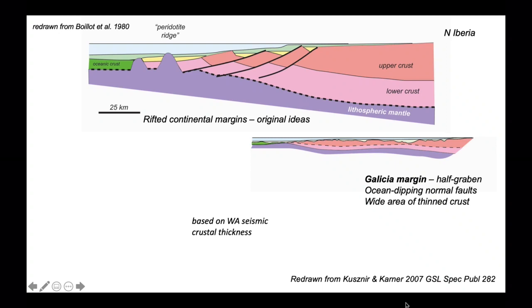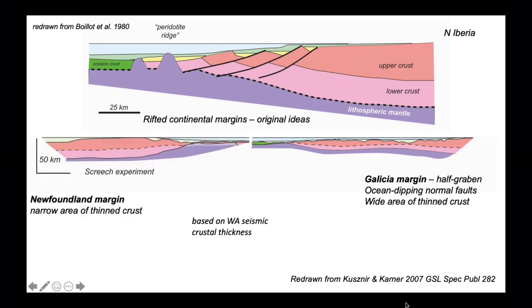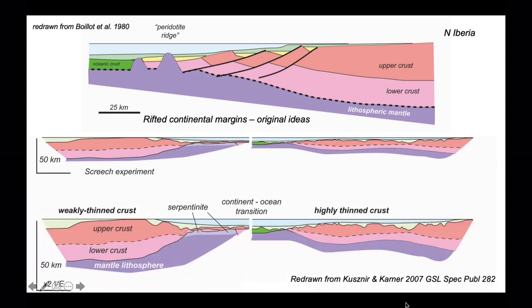Here's a profile based on wide angle seismic data which portrays the crustal thickness coming off Iberia. Let's look to the other side of the Atlantic and add a scale. This is based on another set of wide angle seismic experiments called Screech. We can compare the Newfoundland margin with the Galicia part of North Iberia. On the Newfoundland side, the crust is only weakly thinned. It's still got a respectable thickness and it necks very abruptly to thin to almost absent continental crust. In contrast, the Iberian side thins over a much greater region, so the margins are strongly asymmetric.